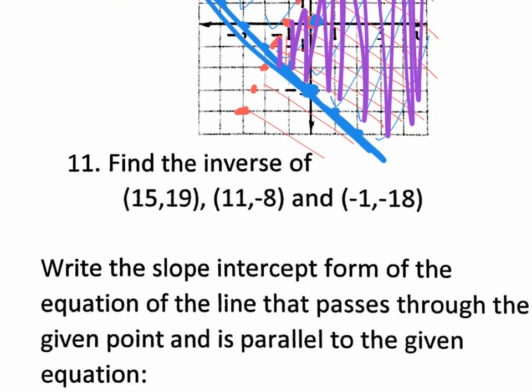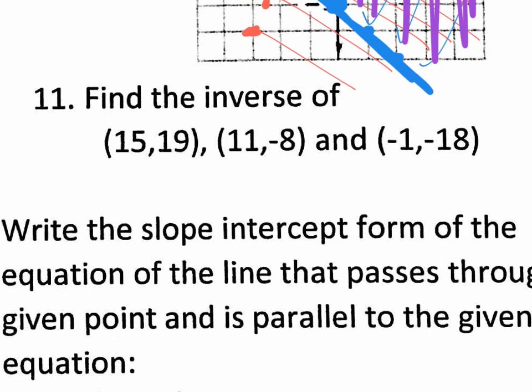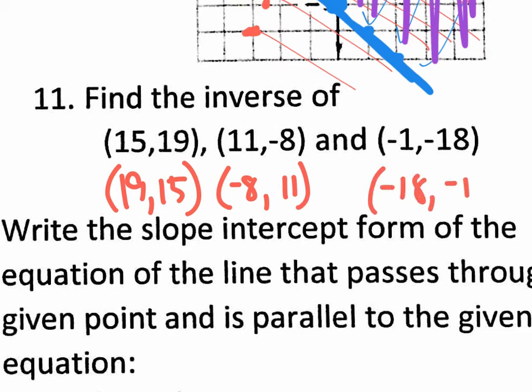So number 11, that was almost like the other one that was so easy. I might get confused. Find the inverse. Remember the process of finding the inverse of an equation is switching X and Y and solving for Y, but the process of finding the inverse of some coordinates is simply switching X and Y. You can't solve for Y because it's not an equation that you could solve. It's just coordinates. So what's your answer actually going to be: 19 comma 15. Don't change any signs, right? This one's going to be negative eight, positive 11. And this last one, negative 18, negative one done.